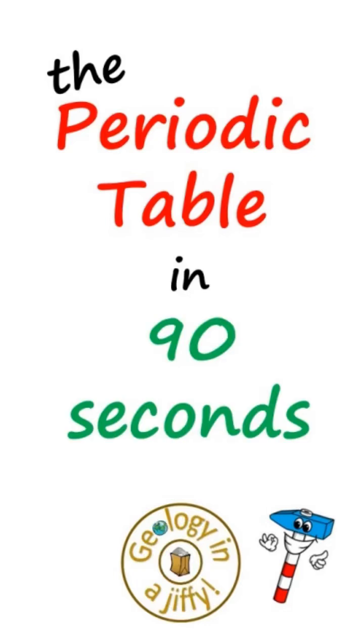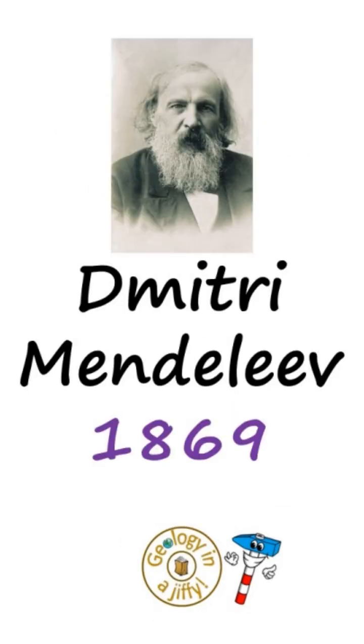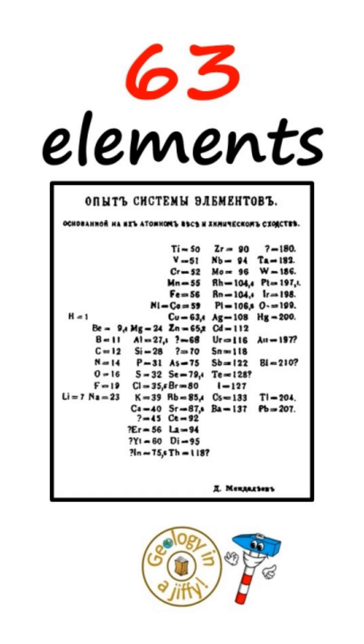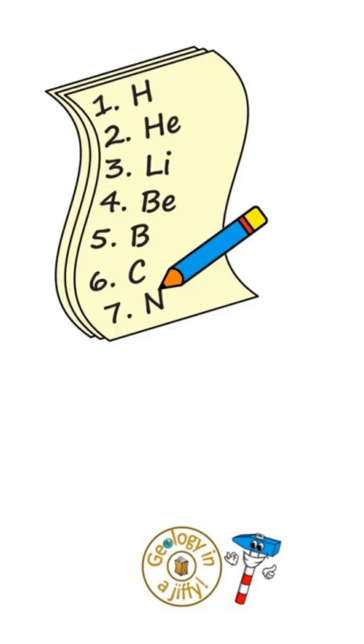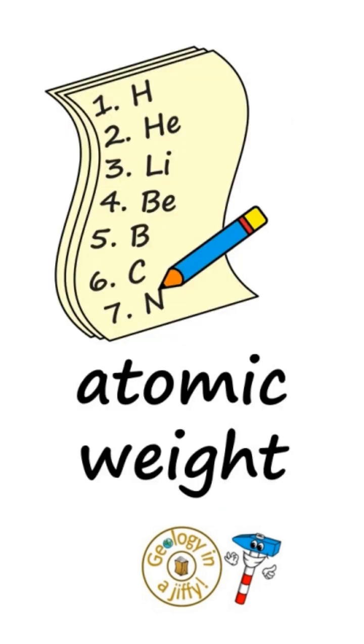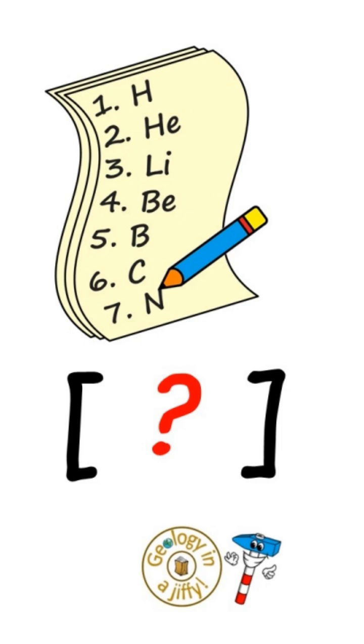The periodic table summarized in 90 seconds. Dmitri Mendeleev in 1869 took the 63 known elements then and listed them according to the atomic weight but left gaps for those that had yet to be discovered.